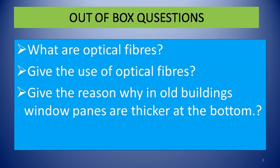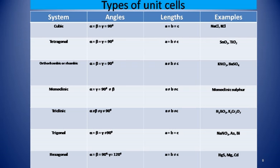Now, the types of unit cells: the unit cell is divided into seven major crystal systems — cubic, tetragonal, rhombic, monoclinic, triclinic, trigonal, and hexagonal. Students should study the angles and lengths (alpha, beta, gamma and a, b, c) for each system and their examples, as these are frequently asked as MCQs in competitive exams.